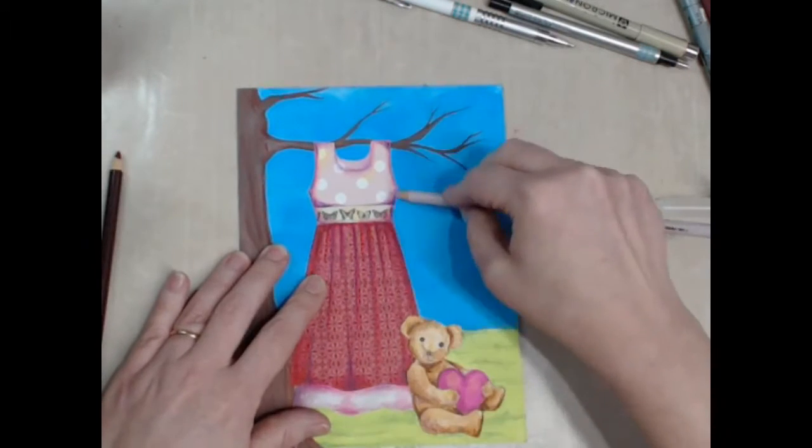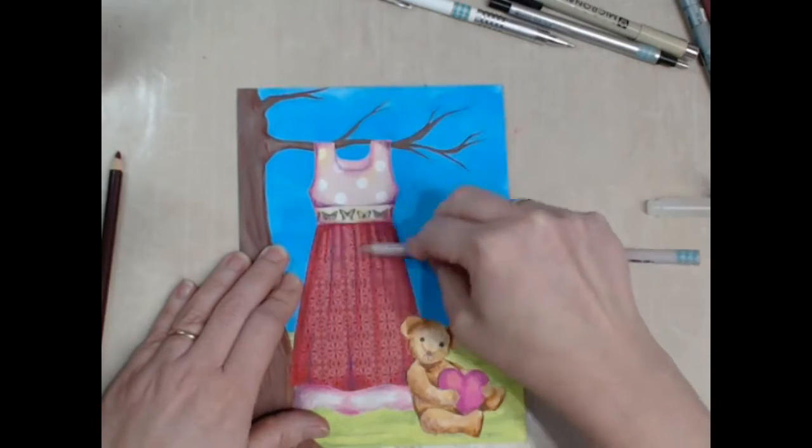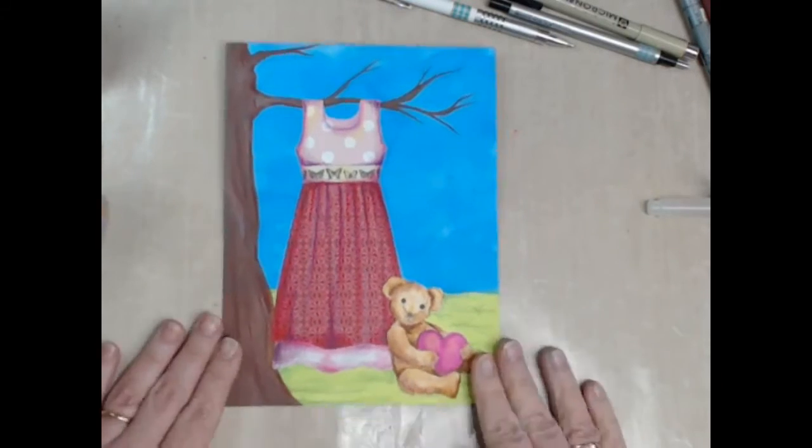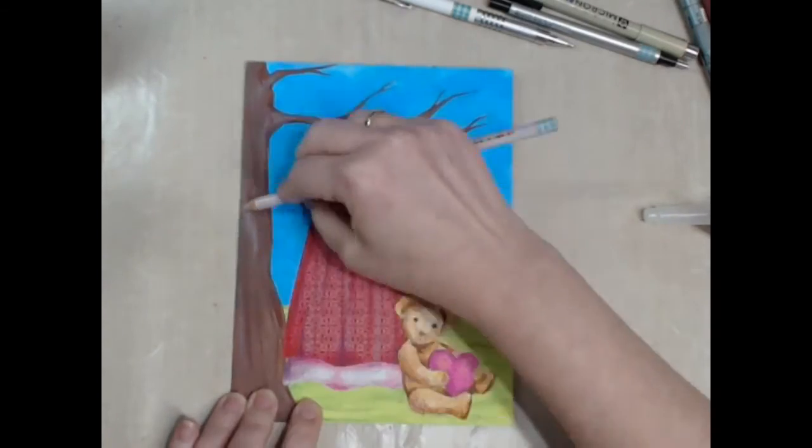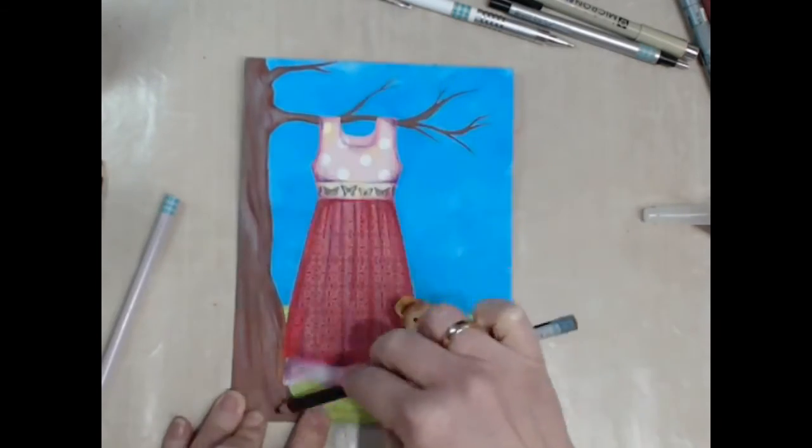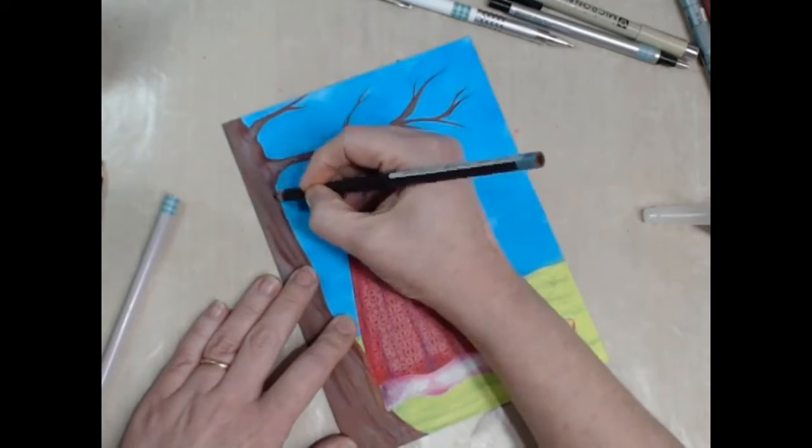I've extended the twiggy branches at the end and I've also carried those colours that I've used within the tree further into my design. So I've put touches on the teddy bear and a few touches within the dress.